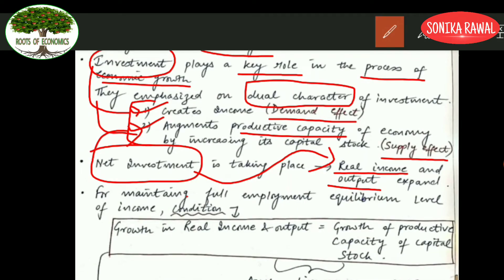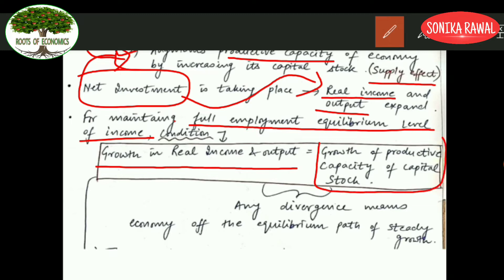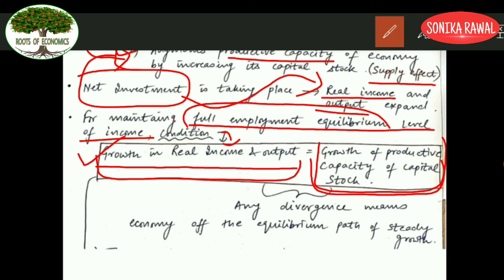Further, they say that in order to maintain full employment equilibrium in the economy, there is a condition that needs to be fulfilled. The condition is that growth in real income and output should be equal to growth of productive capacity of capital stock. On the left-hand side this is the demand effect of investment, and on the right-hand side this is the supply effect of investment.